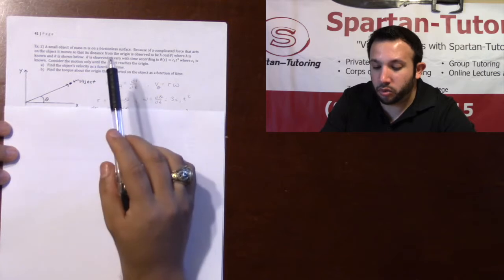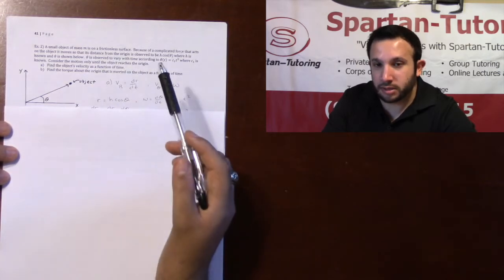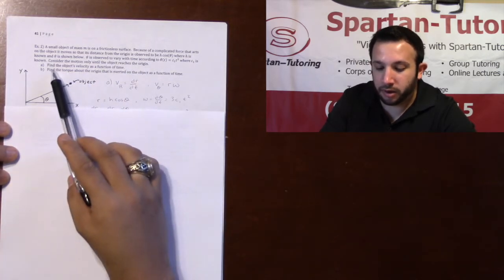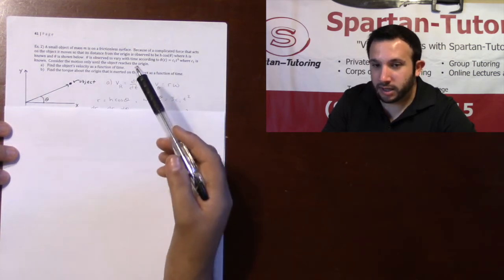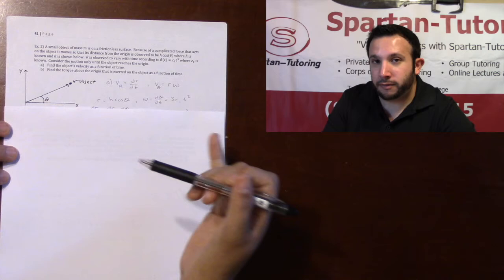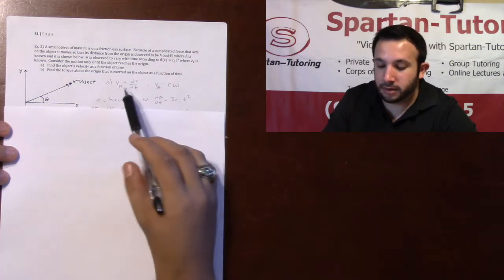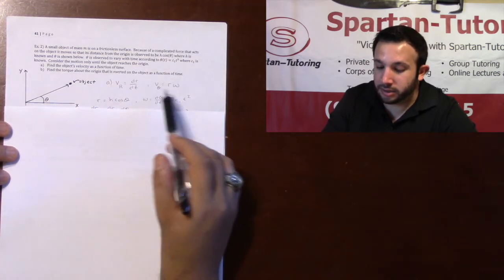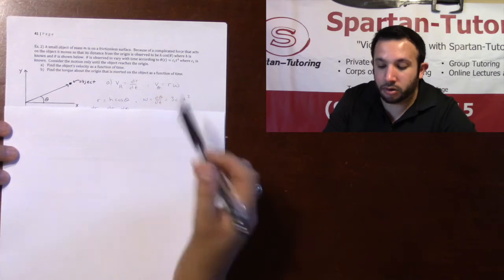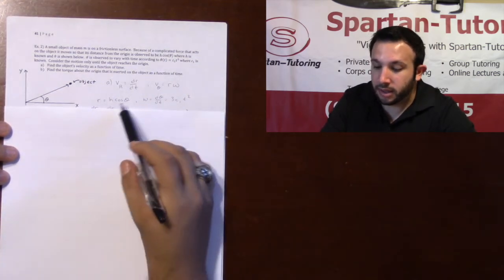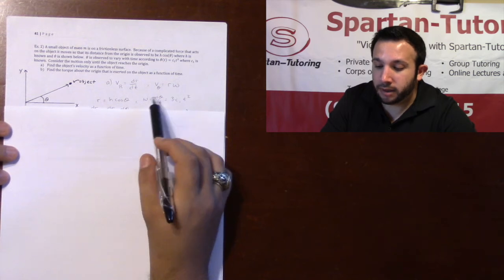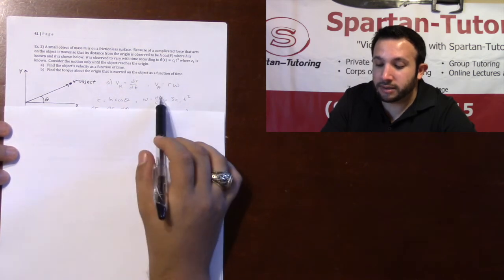Consider the motion only until the object reaches the origin. In part A, find the object's velocity as a function of time. So what I need is I'm going to find my vr and my v theta. vr is dr/dt and v theta is your r omega. Now we already saw that r is h cosine theta. And if I want to find omega, omega is your dθ/dt.